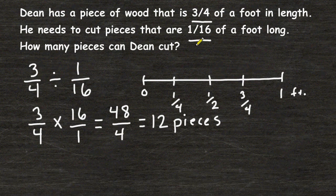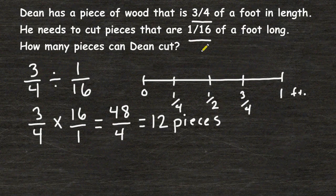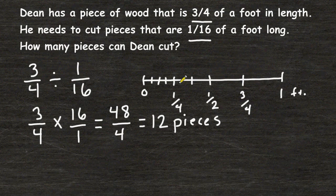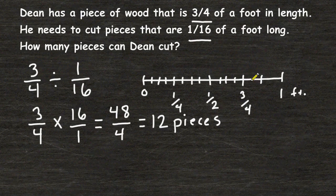Now it says that Dean wants to cut his wood into pieces that are 1 16th of a foot. So now I am going to divide this entire foot into 1 16th of an inch. So this quarter has to be broken into 4 sections. This quarter into 4 sections. This quarter into 4 sections. And this quarter into 4 sections.